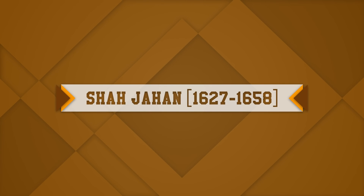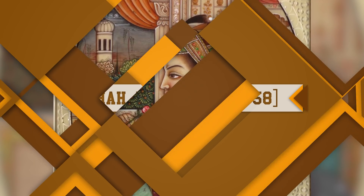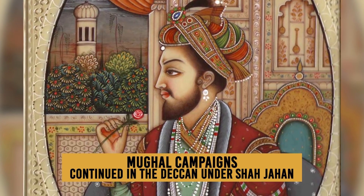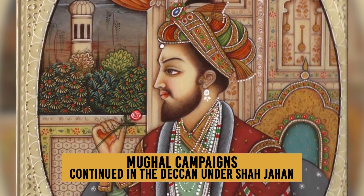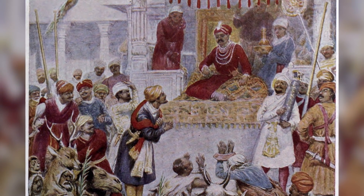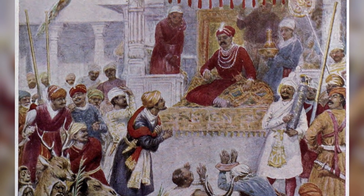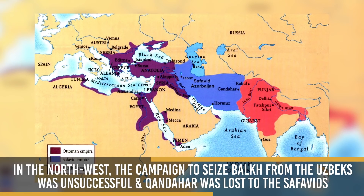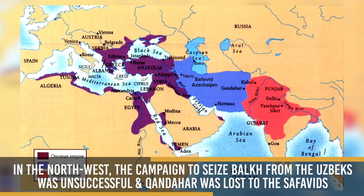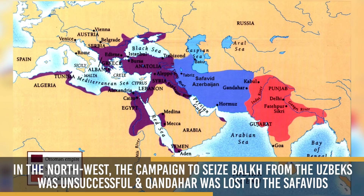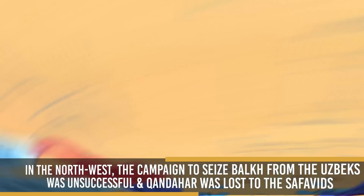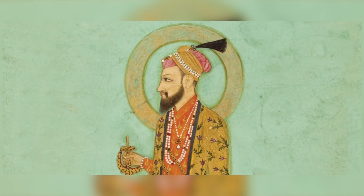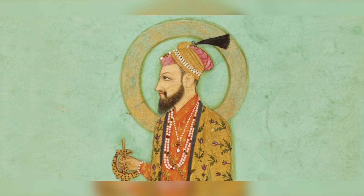Shah Jahan, from 1627 to 1658. The Mughal campaigns were continued in the Deccan under Shah Jahan. The Afghan noble Khan Jahan Lodi rebelled and was defeated. In the northwest, the campaign to seize Balkh from the Uzbeks was unsuccessful and Kandahar was lost to the Safavids. Shah Jahan was imprisoned by his own son Aurangzeb for the rest of his life in Agra.